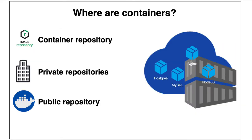Containers are typically stored as container images in container registries. A container image is a lightweight, standalone, executable package that includes everything needed to run a piece of software — the code, runtime, system tools, libraries, and settings. Container registries are services that store and distribute container images, allowing developers to push, pull, and manage images. Popular registries include Docker Hub, Google Container Registry, and AWS Elastic Container Registry.